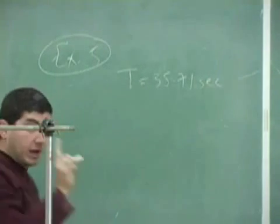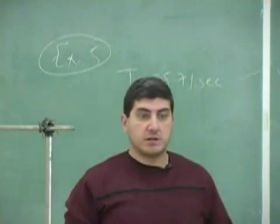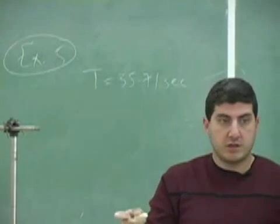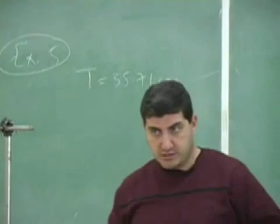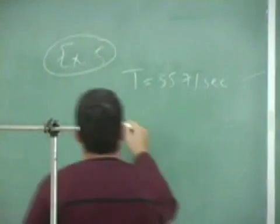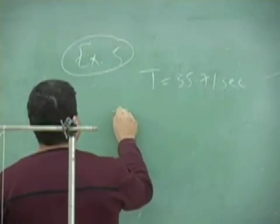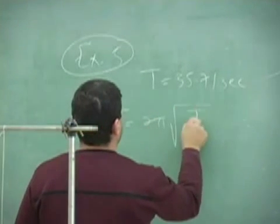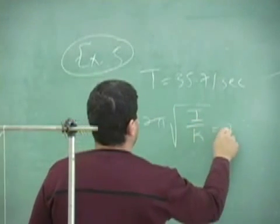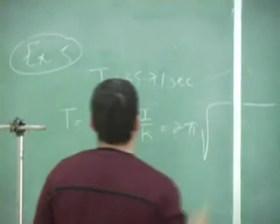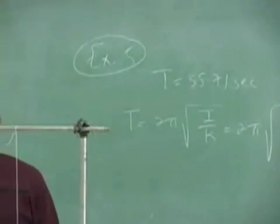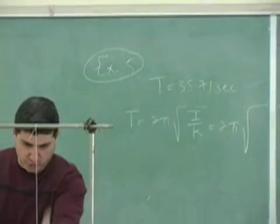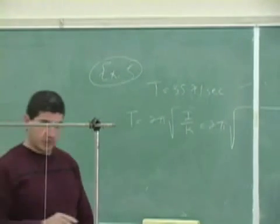This time I will need the — since I don't know the torsional constant of the string, I'm going to have to first calculate it, right? T equals 2π square root of I over kappa. What's the I of the sphere? It's rotating around the axis going through its center, right? Two-fifths mR squared.